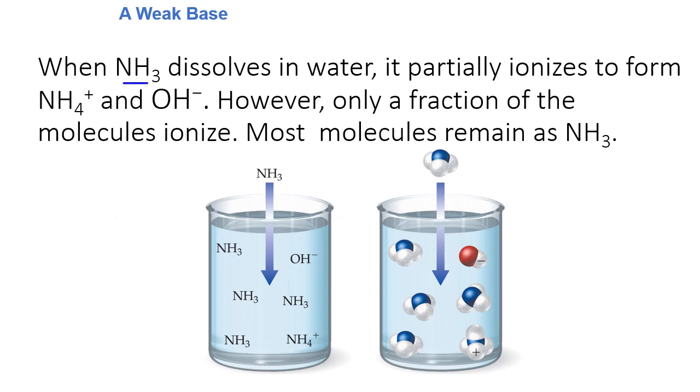NH3 is an example. Remember, NH3 is a Bronsted-Lowry base. It is a proton acceptor. When you put it in water, some of it will accept a proton from the water and make NH4+ and OH-. But you're still going to have a bunch of NH3 floating around. That's why it's a weak base.